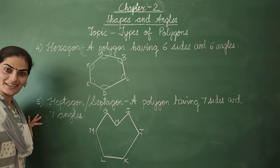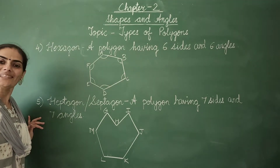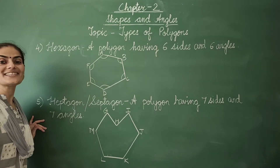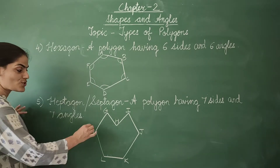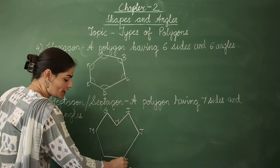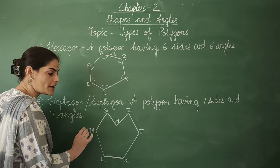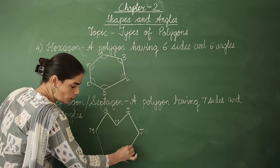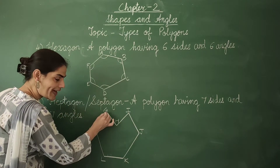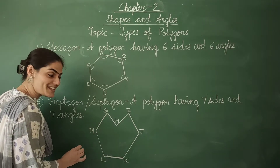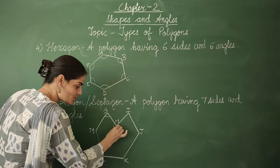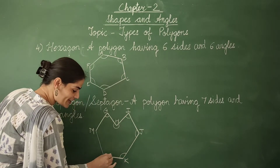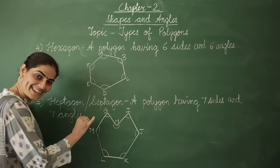Next one is a heptagon, and we can also call it a septagon. A polygon having seven sides and seven angles is called a heptagon. Look at this figure G, H, I, J, K, L, N — it has seven sides and seven angles.